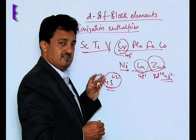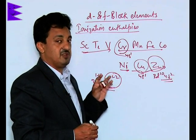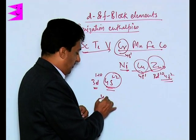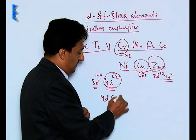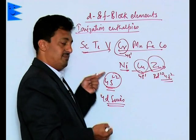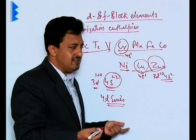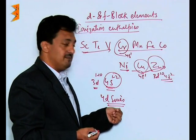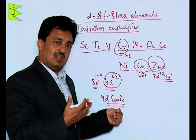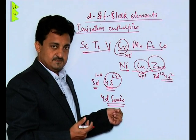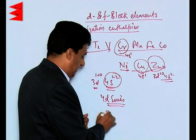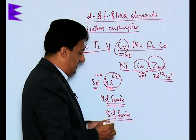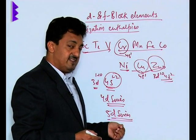This is the general trend for the 3d series. When we move down to the 4d series, those elements have lower ionization enthalpies than the 3d elements. The reason is straightforward — the 4d elements are larger in size, and their electrons are screened to a greater extent.